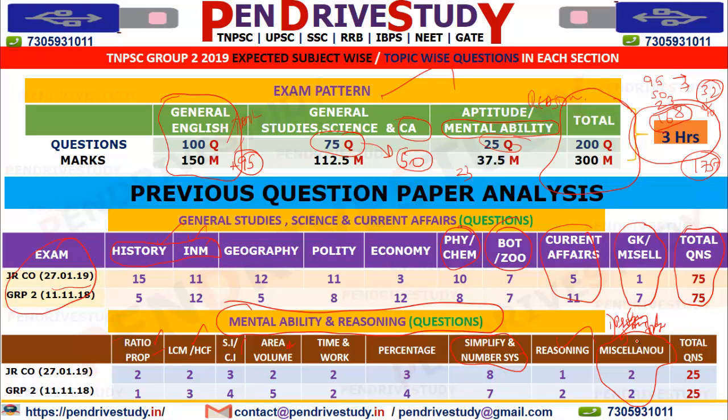Aptitude is easy to prepare. Focus on only 3 key points in that section. This is our opportunity to gain added marks. Target 22 to 25 out of 25 in Aptitude. Try for it and you will not have a problem.